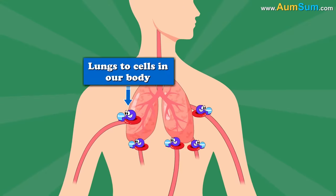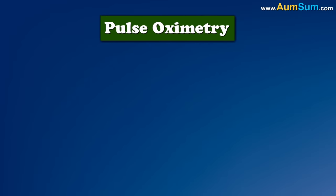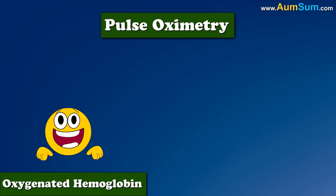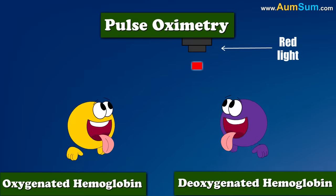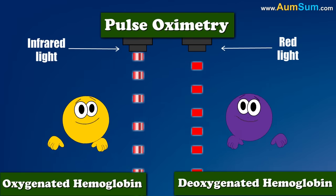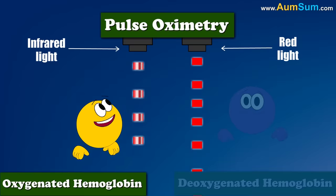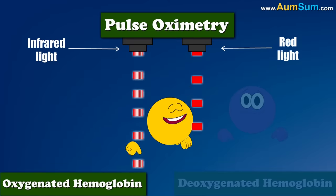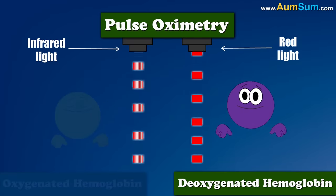Pulse oximetry is based on the principle that oxygenated hemoglobin and deoxygenated hemoglobin differentially absorb red and infrared light. Oxygenated hemoglobin absorbs greater amounts of infrared light and lower amounts of red light as compared to deoxygenated hemoglobin.